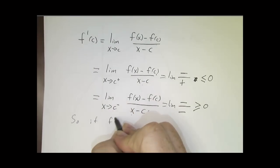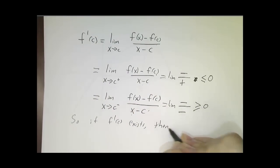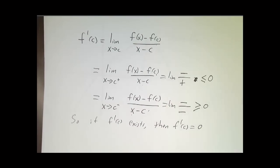So if f prime of c exists, then f prime of c is zero.